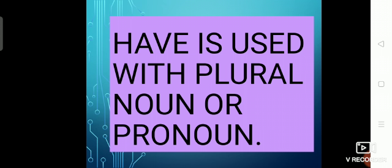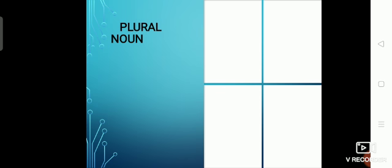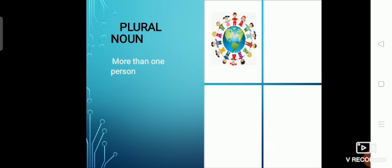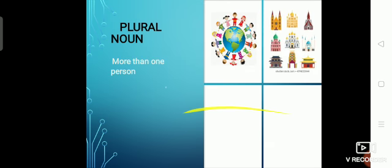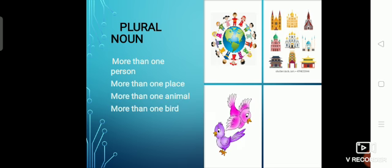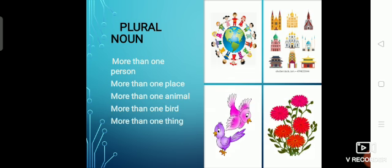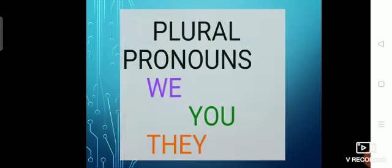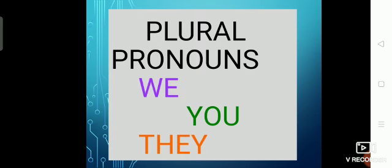Next we come to have. Have is used with a plural noun or pronoun — that is more than one. When we are talking about more than one person, more than one place, more than one animal or bird, or more than one thing. The plural pronouns are we, you, and they.